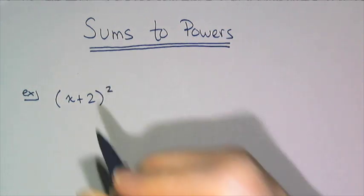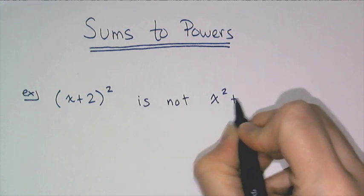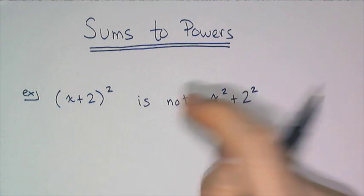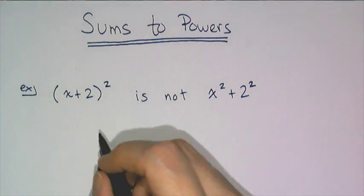First and foremost, this is not x² plus 2². You don't just sprinkle the exponent over there, and I'm going to prove it to you first by using some numbers instead of an x.